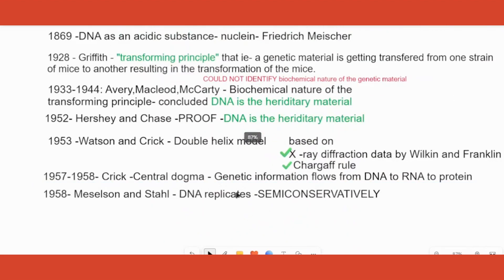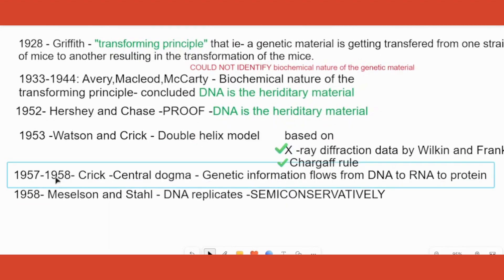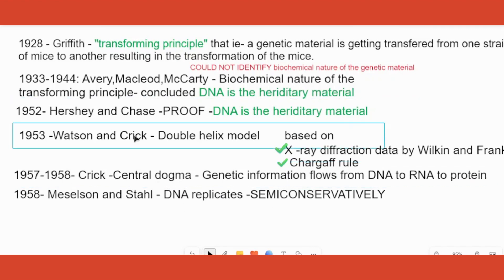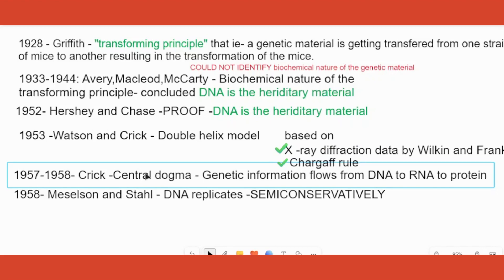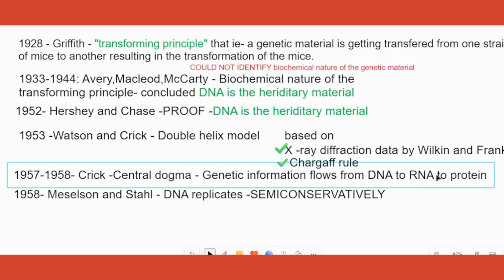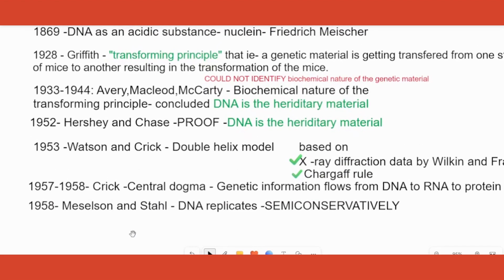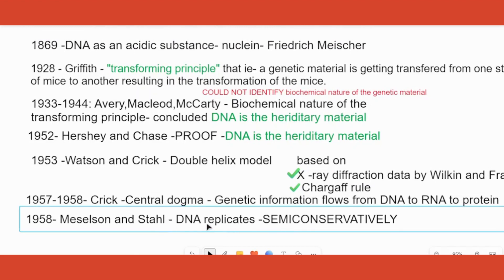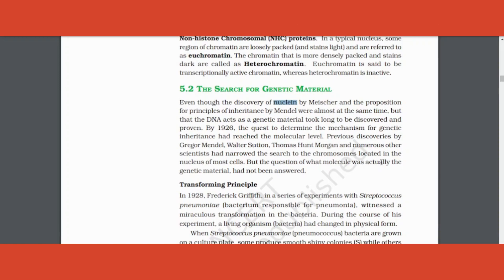So by 1953 we had the double helix model. Then Francis Crick — the same person involved in the double helix proposal — proposed the Central Dogma, which states that genetic information moves from DNA to RNA to protein. DNA also has to be duplicated before this information is transferred; that duplication is called replication of DNA. Meselson and Stahl did experiments to prove that DNA replication happens semi-conservatively. We are going to learn all these experiments now.